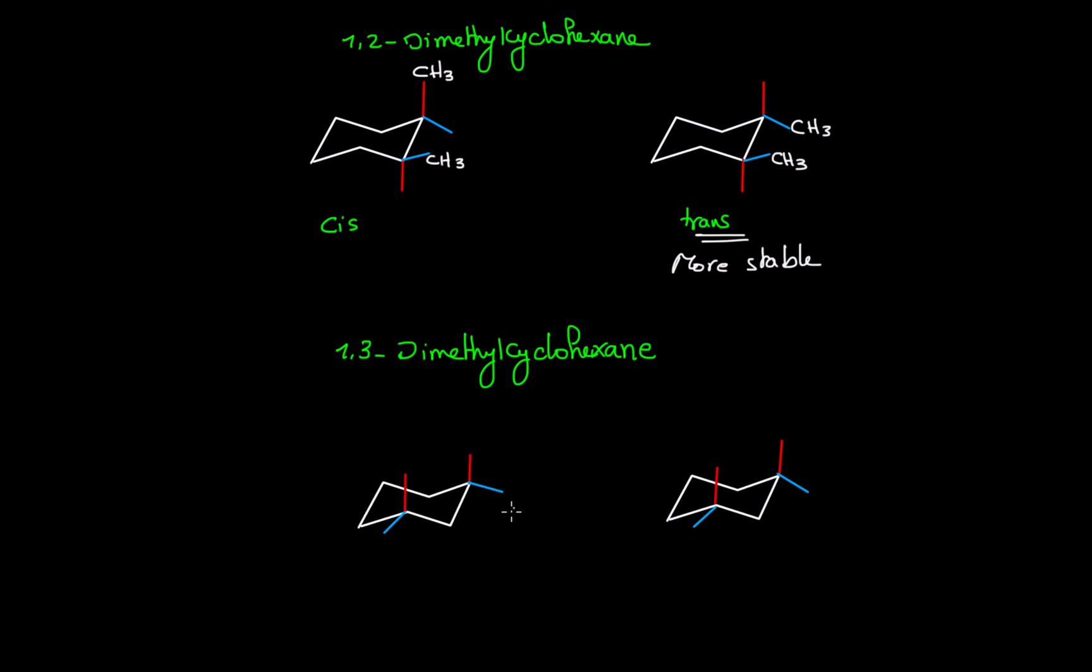In the case of 1,3-dimethylcyclohexane, for cis conformation we can draw both CH3 groups on equatorial bonds since both equatorial bonds on the one and three positions are facing down. However, for trans conformation at the one and three positions, if we place a CH3 group on one equatorial, the second has to be facing the opposite side and therefore it has to be on axial. In this case, cis will be more stable.